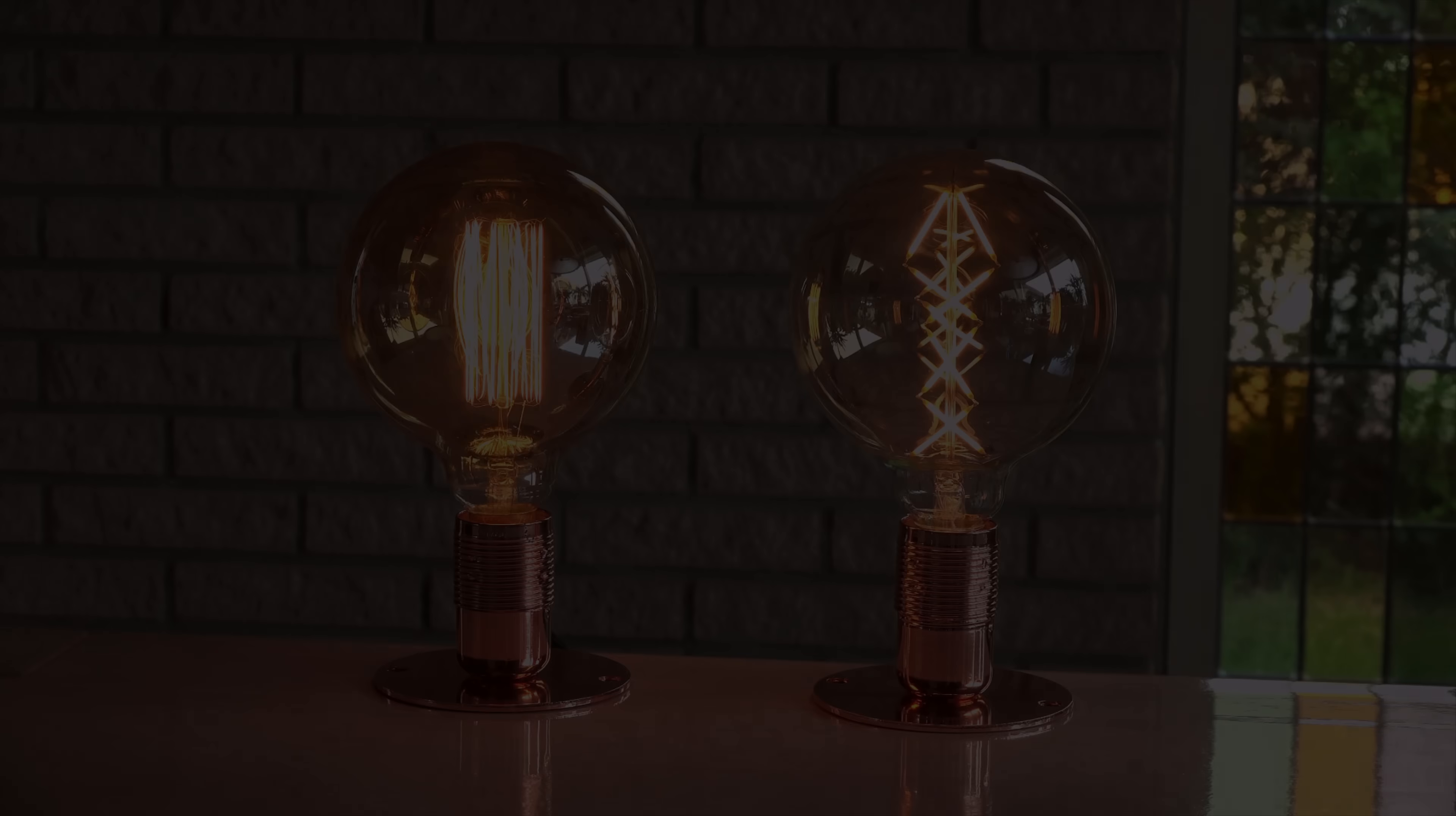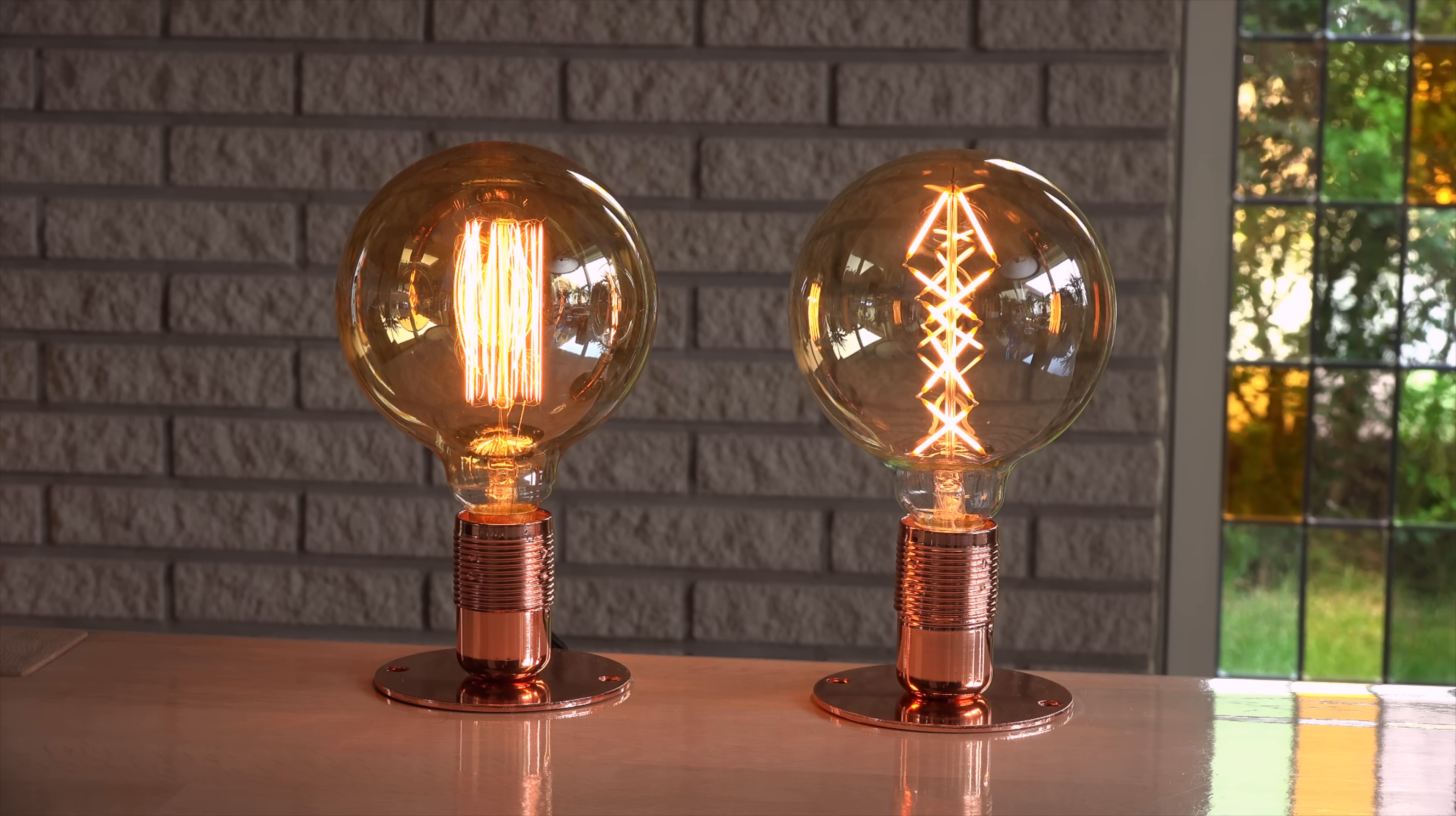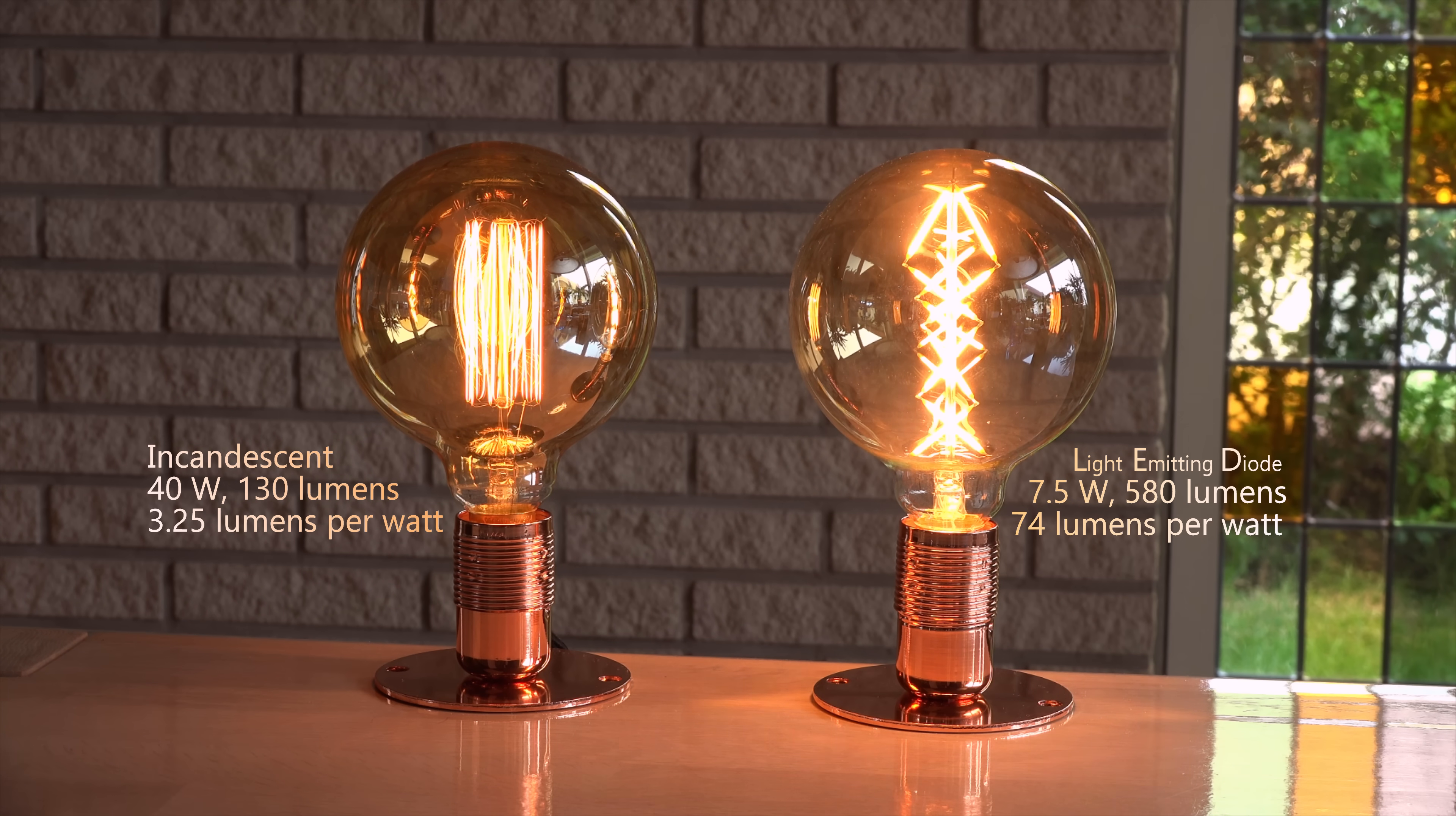But first let's look at the difference between incandescent and LED. Here we have two large decoration bulbs. One of them is at full power drawing close to 40 watts. The other one is dimmed. If I crank it up it still only draws around 7.5 watts but gives off much more light. Why is the LED so much more efficient?